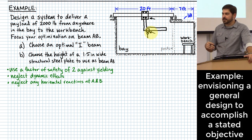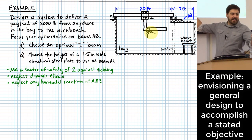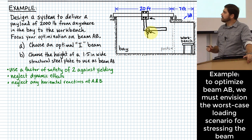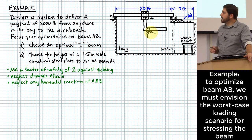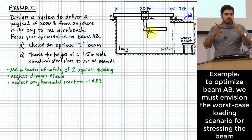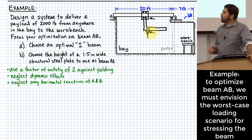That was an example of the artsy side of design — coming up with an idea. Most of our engineering study doesn't teach us how to come up with an interesting idea like that. What engineering study does for us is: now that we have the idea, we can figure out how to optimize it. Let's optimize the top beam going from A to B.